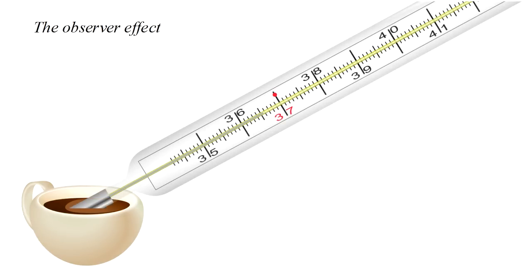This is often called the observer effect. Suppose we have a cup of coffee and we want to know its temperature. So we stick a thermometer in it. Well, if the thermometer is too big, it will absorb considerable heat from the coffee and so change the very temperature we're trying to measure. A solution would be to get a thermometer small enough that we can safely ignore the heat it absorbs from the coffee.